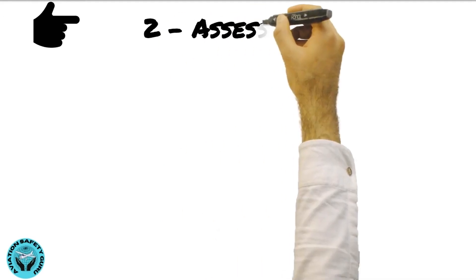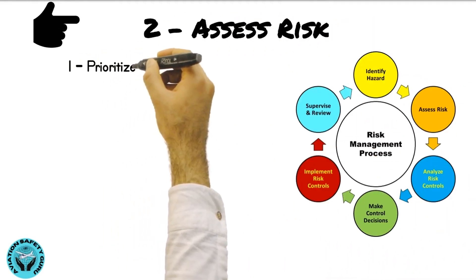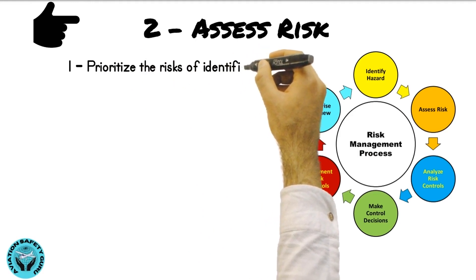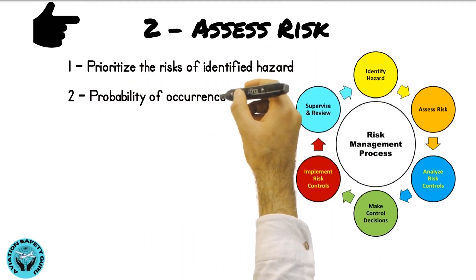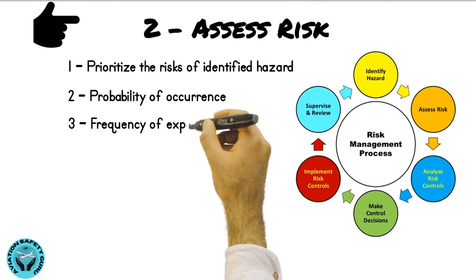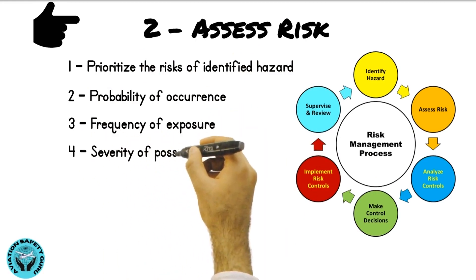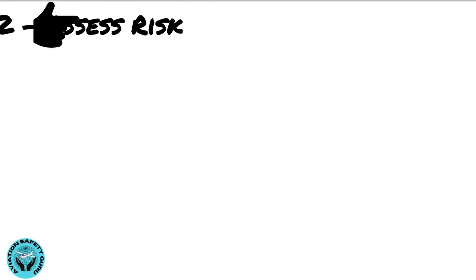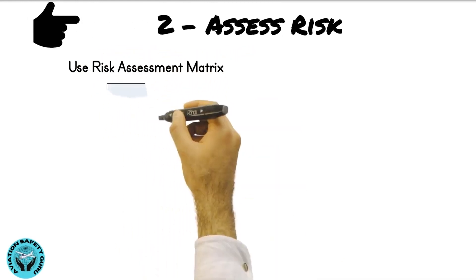In order to assess risk, you must prioritize the risks of identified hazards based on probability of occurrence, frequency of exposure, and severity of possible loss. You must also use a risk assessment matrix.